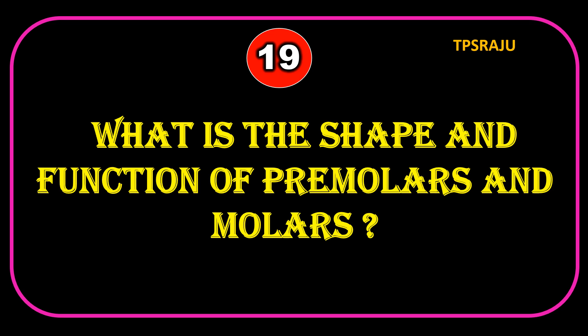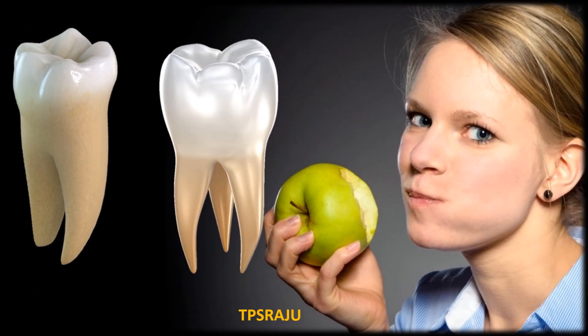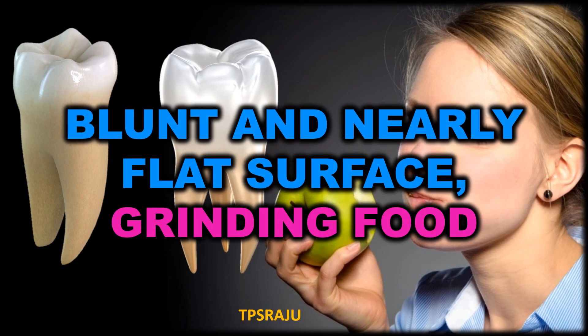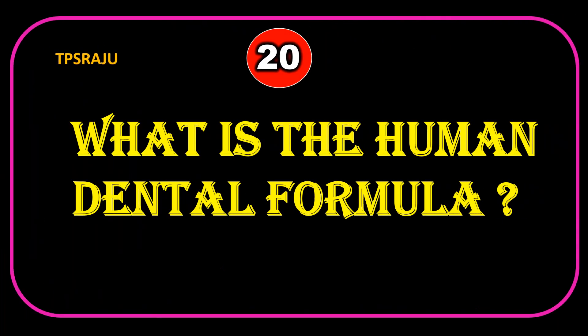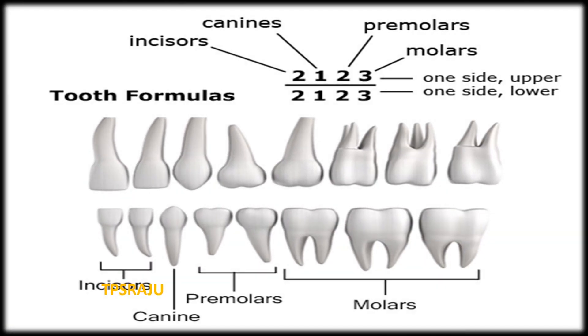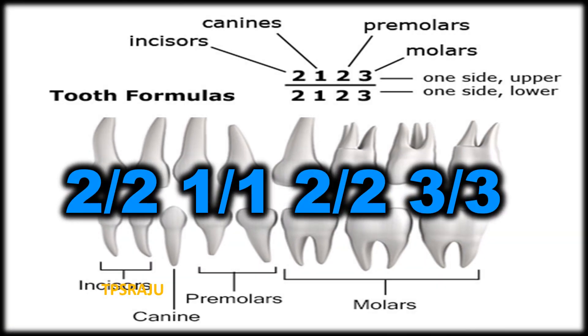What is the shape and function of premolars and molars? The shape is blunt and nearly flat surface, and the function is grinding food. The human dental formula is 2/2, 1/1, 2/2, 3/3.